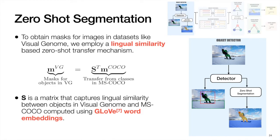Specifically, we learn the lingual similarity between class labels in the two datasets to transfer segmentation information from MS COCO to Visual Genome. The lingual similarity is computed using the inner product of their GloVe embeddings.